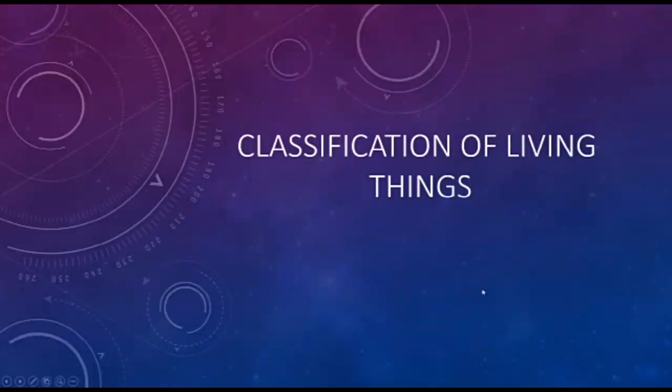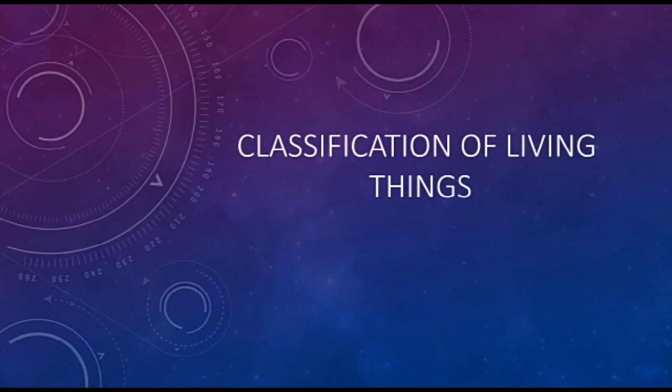Assalamualaikum. I am your teacher and today the topic I am going to explain is classification of living things. Classification means grouping of living things into groups which are similar to each other. For example, plants will be kept with plants and animals will be kept in a group with animals. We can't place animals with plants because they are not similar to each other.